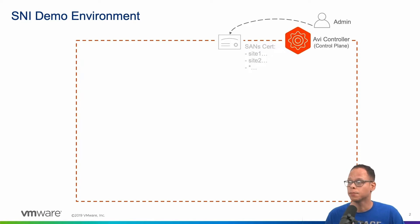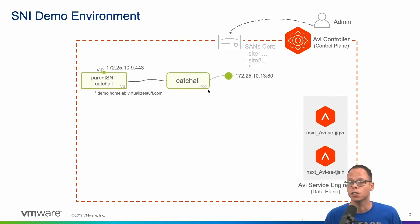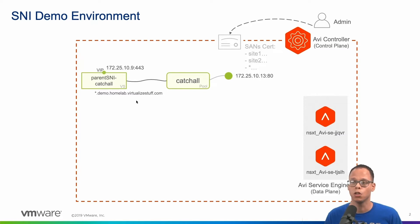In my case, I have a certificate with three subject alternative names: site one, site two, and the wildcard. Next, we want to provision our parent virtual service — this would be our catch-all virtual service, and anything that doesn't match site one or site two will be covered by the wildcard domain name.